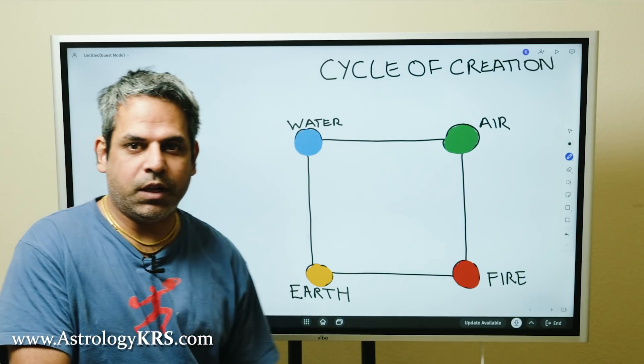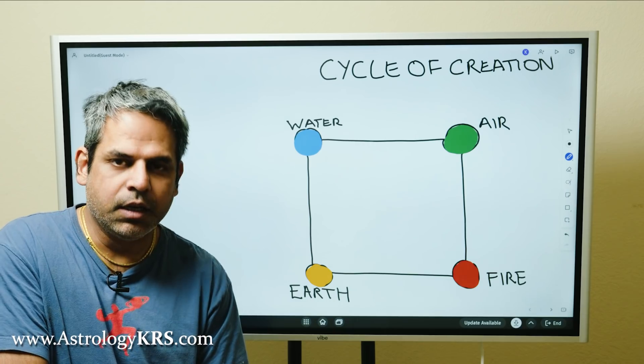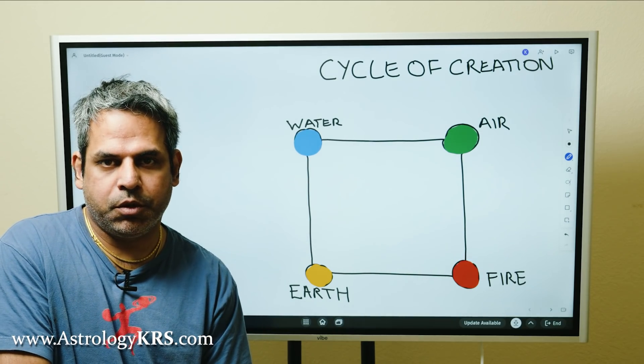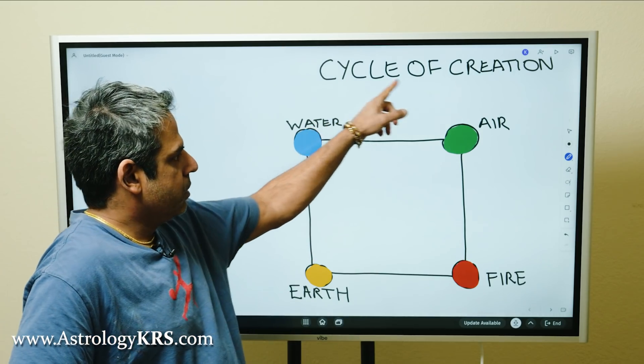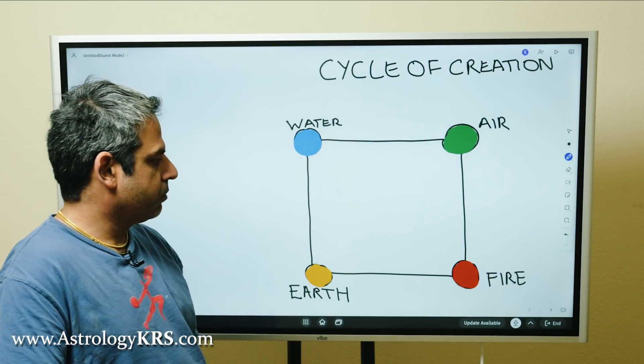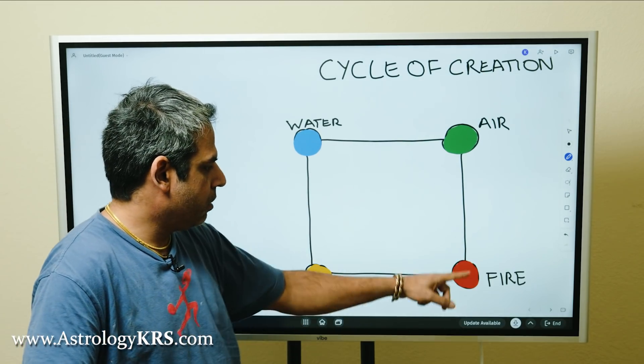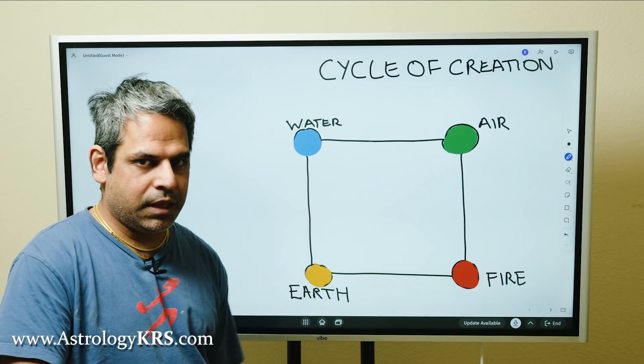Welcome to another session of understanding Venus, marriage, and relationships through cycle of creation. Cycle of creation here you have these four elements: water, air, fire, and earth.